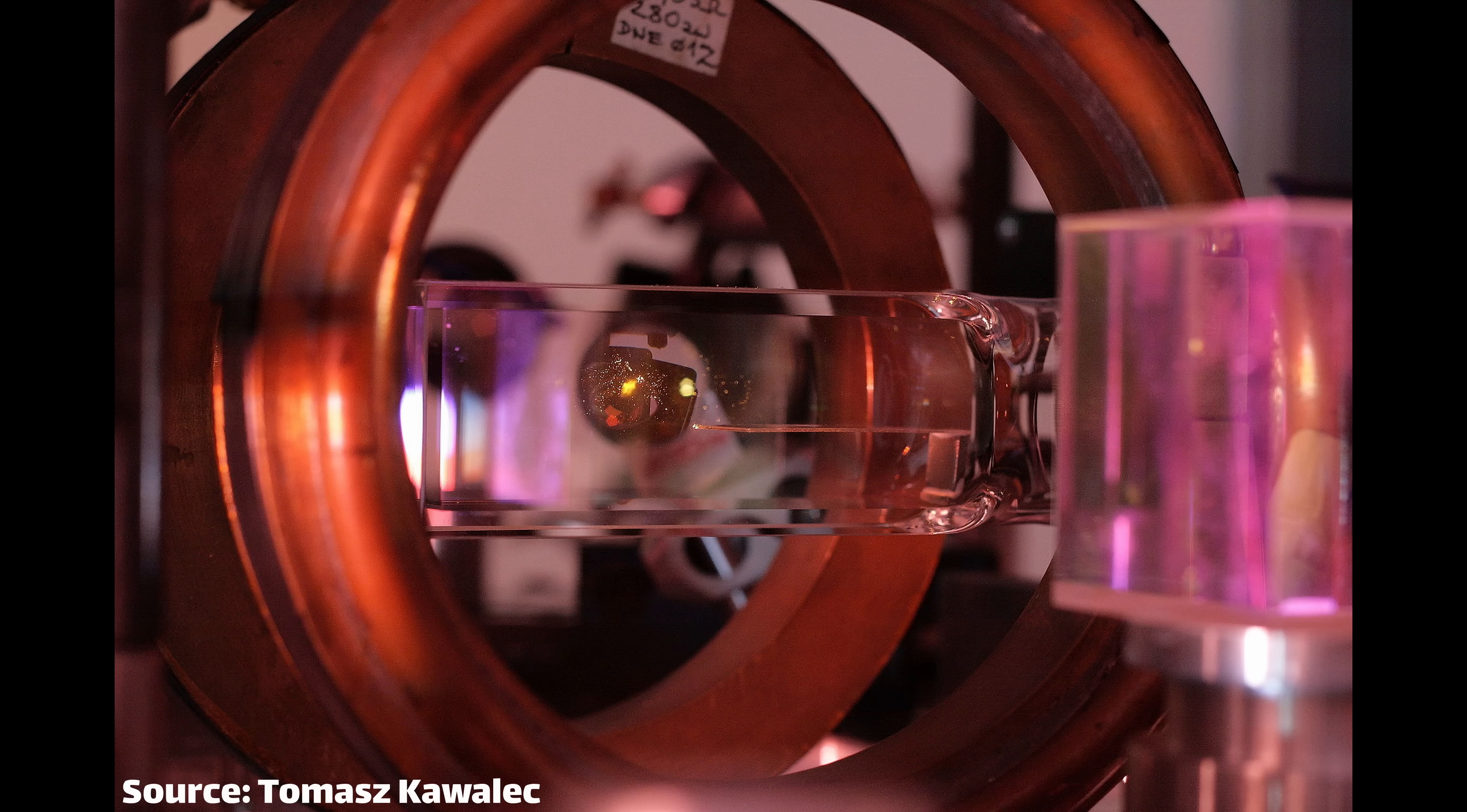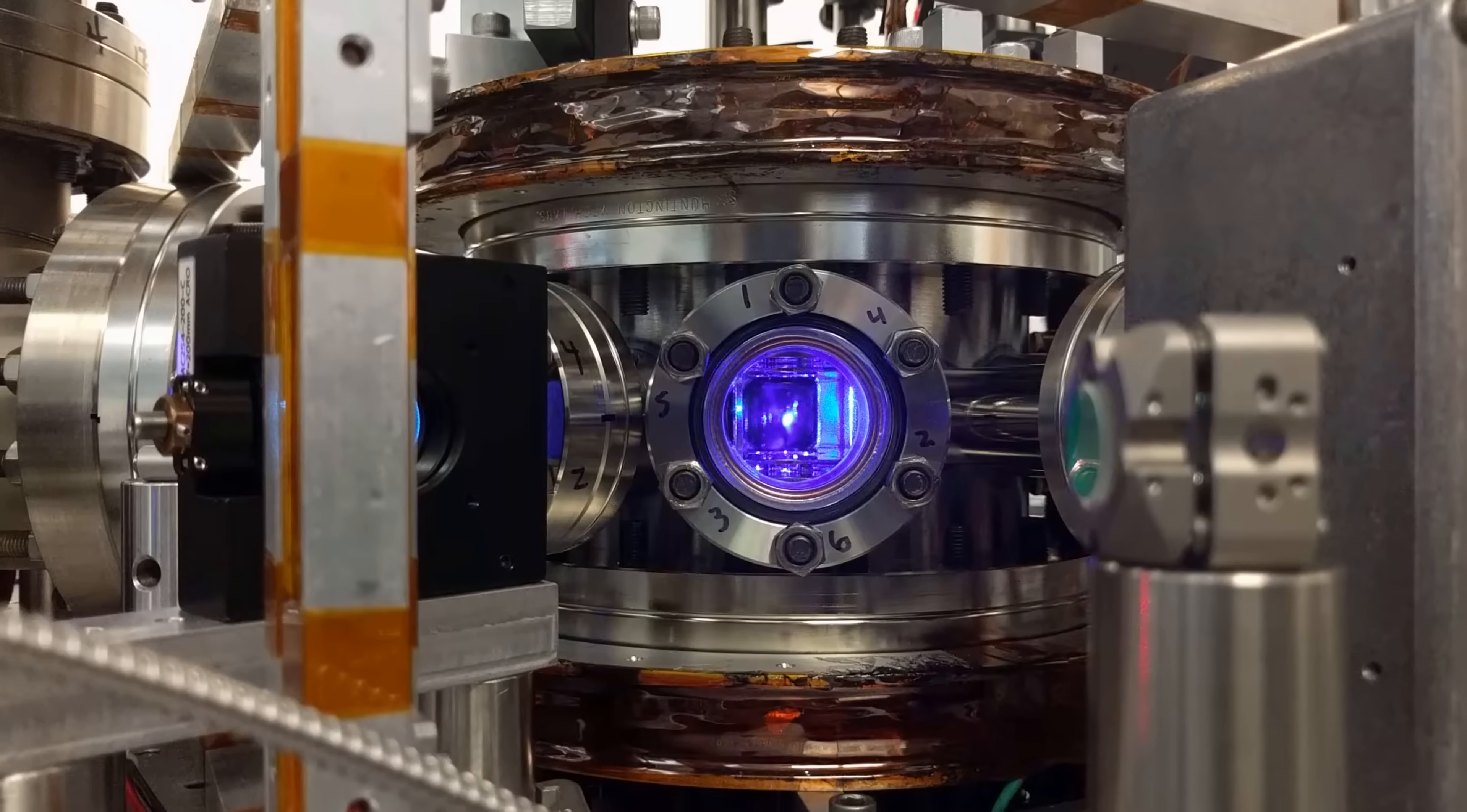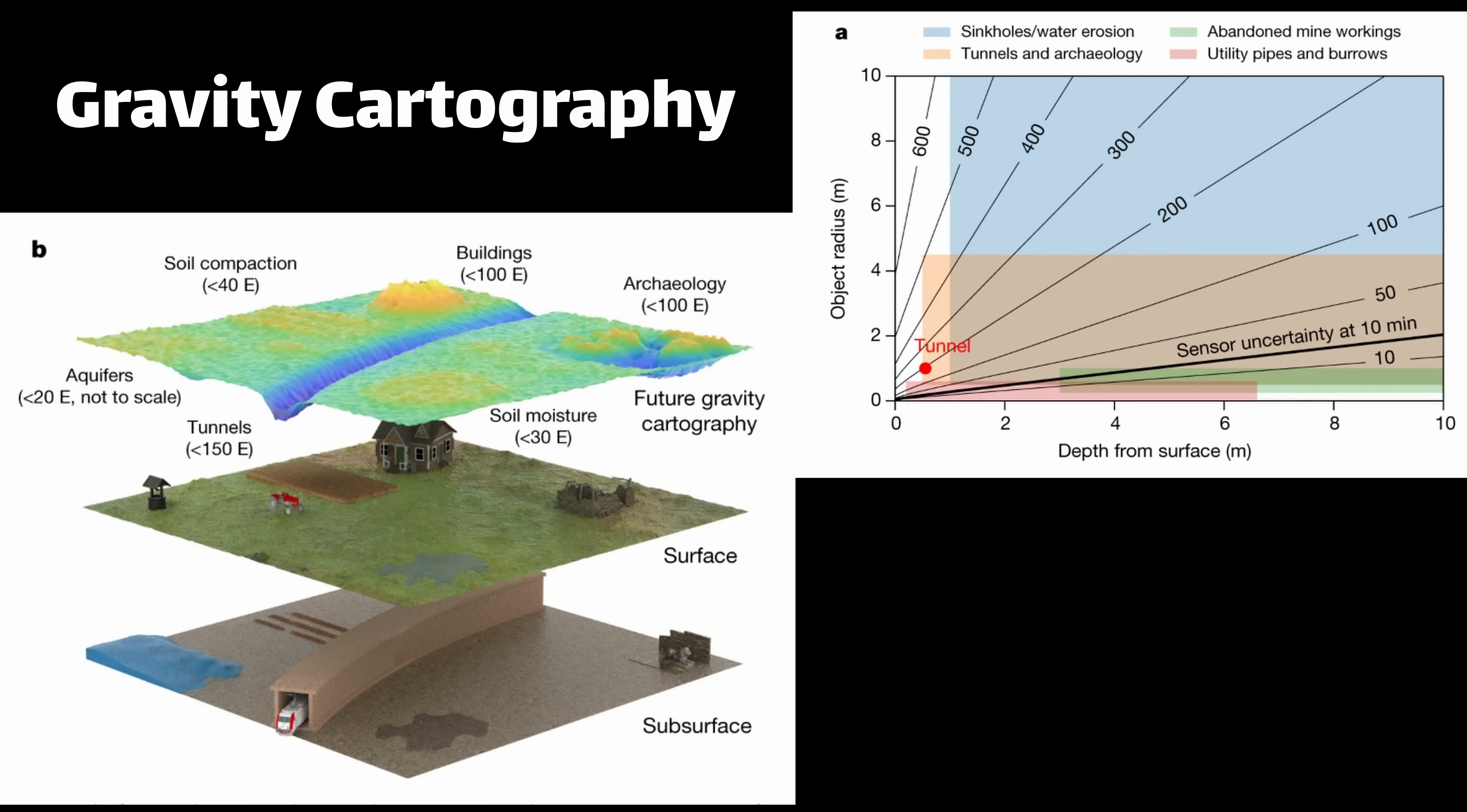It uses lasers to super cool a cloud of atoms, which could then be used for a number of different experiments. MOTs work by focusing multiple lasers onto a single point inside of a vacuum chamber, surrounded by coils which generate a magnetic field. All of this works together to cool a cloud of atoms down to near absolute zero. At these ultra-cold temperatures, atoms can be manipulated and used for experiments like high-precision gravity mapping.